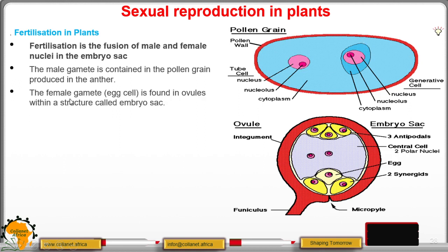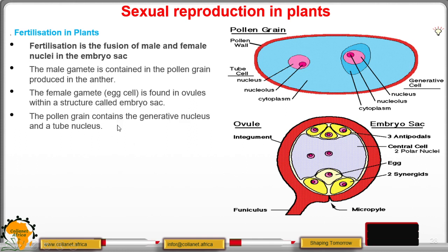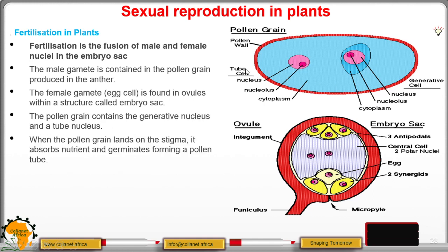The female gamete, or egg cell, is found in ovules, within a structure called the embryo sac. The ovule has a micropyle opening. We have two synergids, the egg cell, two polar nuclei, and three antipodal cells. The pollen grain contains a generative nucleus and a tube nucleus.